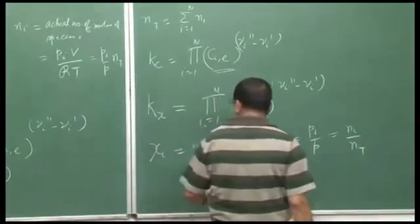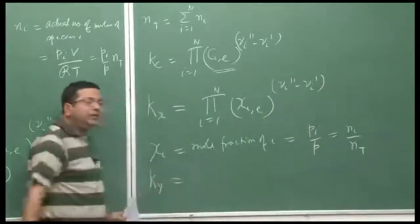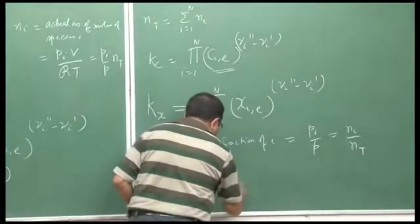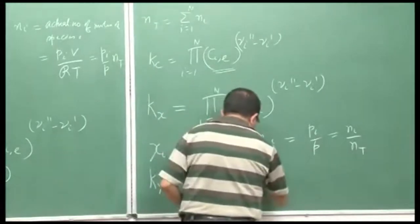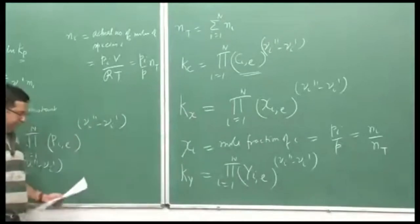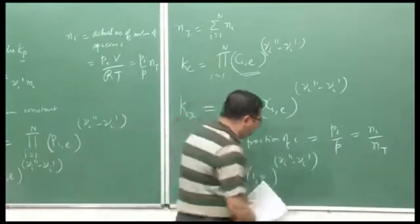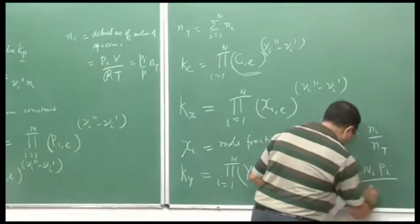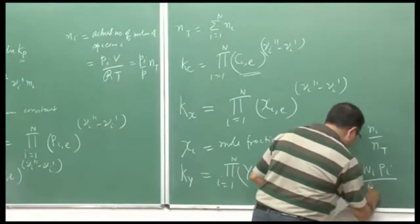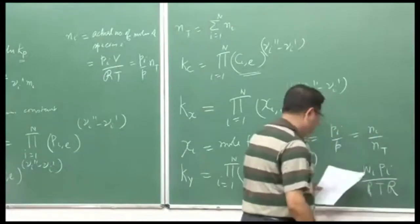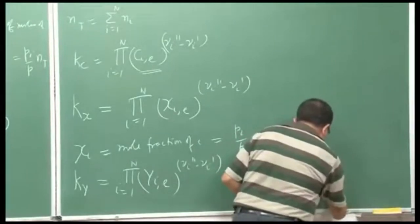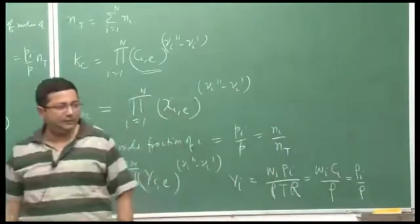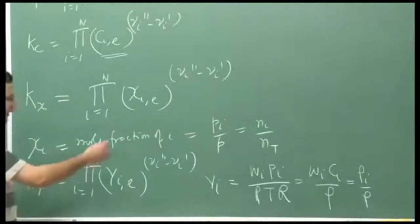Similarly, we can define the equilibrium constant based on mass fraction, Ky. Based on mass fraction, it is defined similarly, where y_i is the mass fraction of species i. So y_i equals the molecular weight of species i times partial pressure times ρ_t R — that is, molecular weight times concentration divided by density, or the density of species i divided by total mass-averaged density. That is the definition of mass fraction. So these are defined properties.